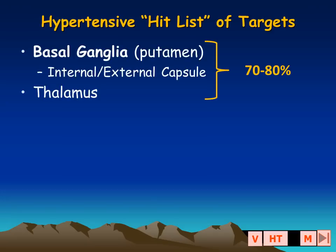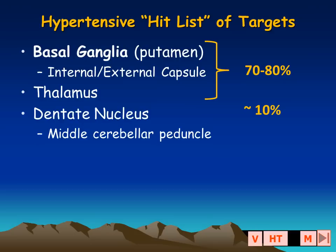Spontaneous hypertensive hemorrhage typically affects the regions of the basal ganglia and the thalamus, as well as the adjacent structure — the internal capsule.